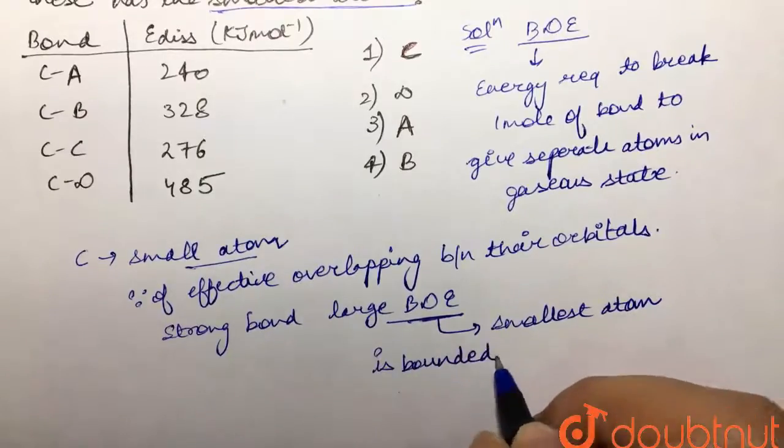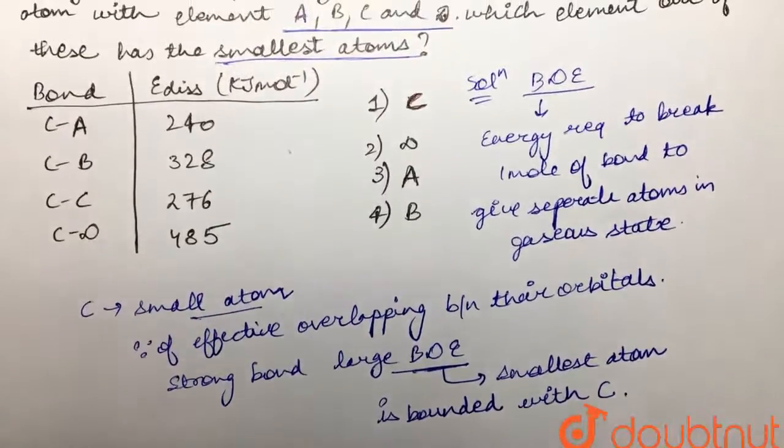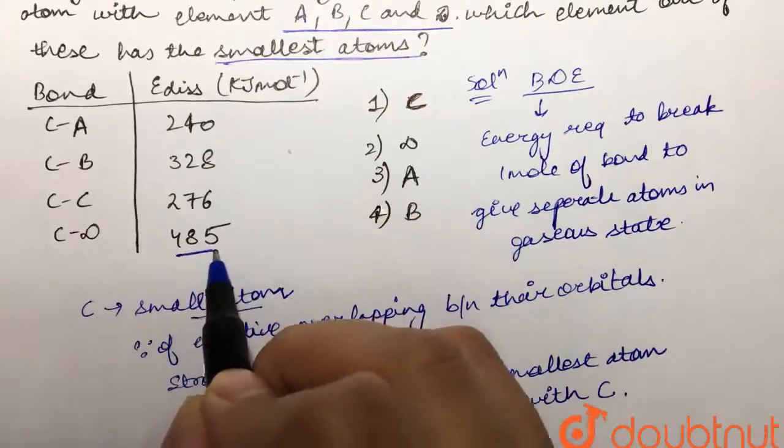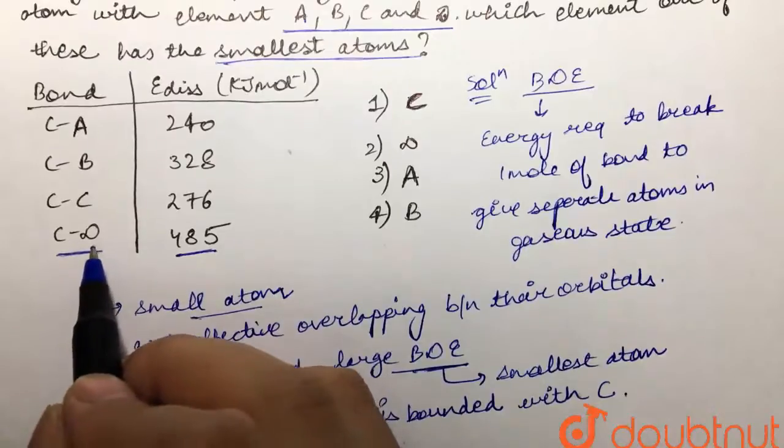If we look at our table, the bond dissociation energy is maximum in case of this option. Over here, carbon is making bond with D atom. So this atom would